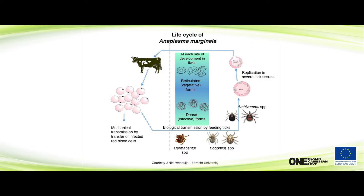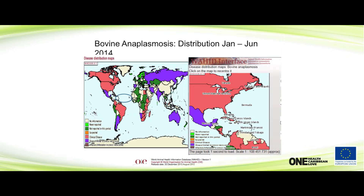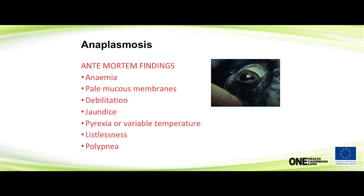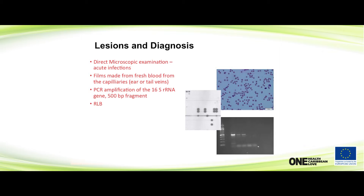The reticulate vegetative forms develop inside the body of the tick. Regarding distribution, the United States has clinical evidence of bovine anaplasmosis, and of course so does the Caribbean. We tend to have Anaplasma marginale. Similar clinical signs include anemia, pale mucous membranes, debilitation, jaundice, pyrexia, variable temperature, and listlessness. You can see these little bodies on the tips of the red blood cells. Diagnosis is by direct microscopic examination, and of course PCR can also be used.